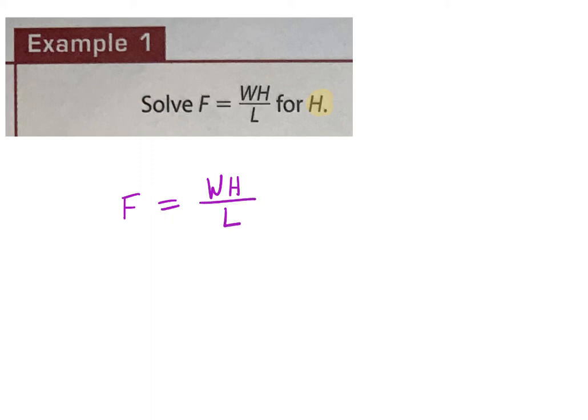Remember, this was actually one type on your test. When you have something like this, remember the top is grouped, so you want to get rid of the bottom first. What operation is happening between WH and the L? What does that line represent? Division. And if that represents division and I'm trying to get rid of it, what do I need to do? Multiply.